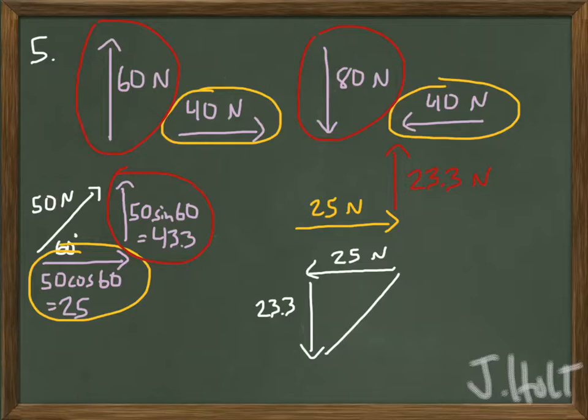So then I drew the resultant vector for both of them. I used yellow to draw the x-component. I used red to draw the y-component. But take a look at what the question is actually asking. It says, what are the magnitude and direction of a sixth force that would produce equilibrium?